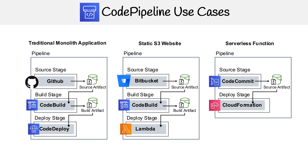Our last one is a serverless function pipeline. You could use CodeCommit, which outputs a source artifact that goes to CloudFormation. CloudFormation is very common for deploying serverless applications, and it would probably be using SAM — the Serverless Application Model. Those are the three pipelines.